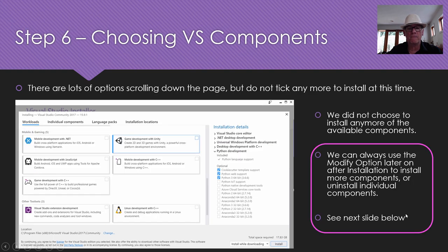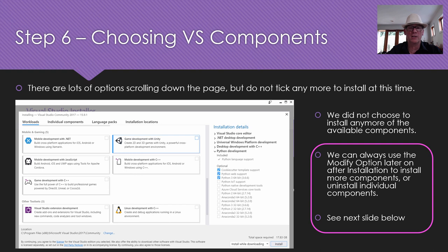If you use that scroll bar at the side to go down, there are other things as well — like you can hook Studio up to Unity and do some game development. But if you don't get all of these now or you've missed one, it's okay, because later on after it's installed, there's a modify option to go back and remove or add new Studio elements.